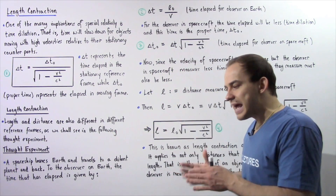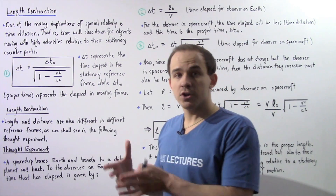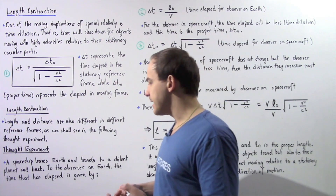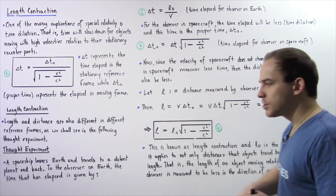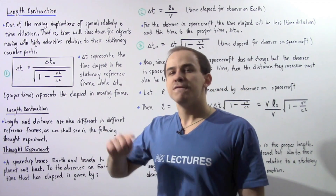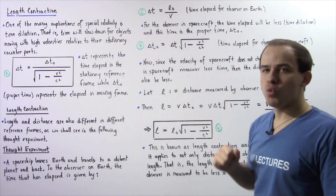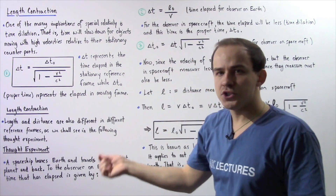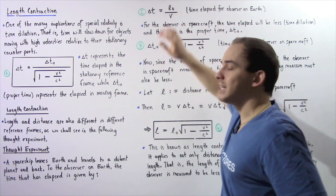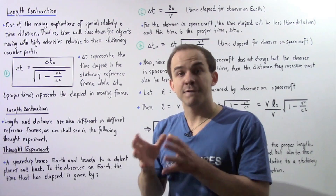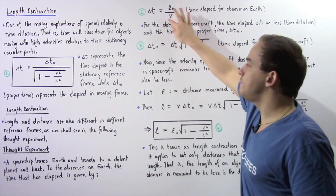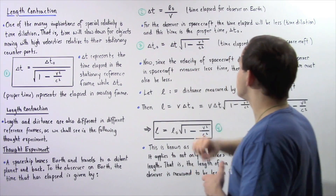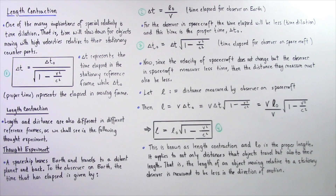A second observer is found on Earth, and Earth is assumed to be stationary — an inertial reference frame. To the observer on Earth, the time elapsed for the entire trip is given by equation two: delta t, the time elapsed for the observer on Earth, is equal to L naught — the entire distance there and back — divided by v, the velocity of the spacecraft.